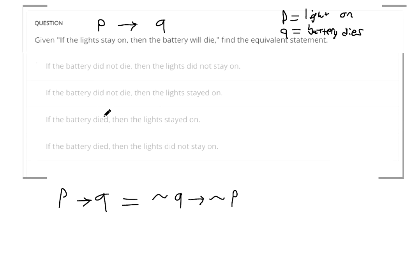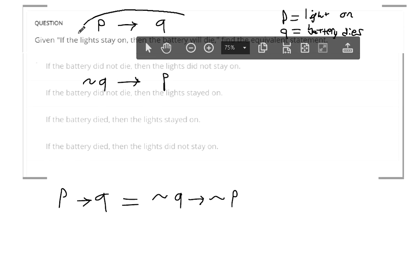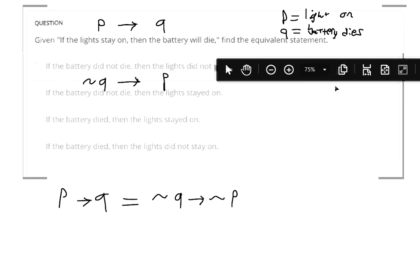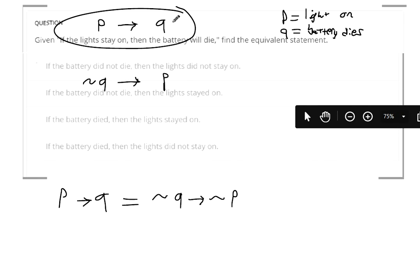So if we go through and translate the rest, if the battery did not die, so that's not Q, then the lights will stay on. That's this statement here. And these two don't match. If you try to negate the entire conditional statement, it should be this. It should be not Q implies not P.